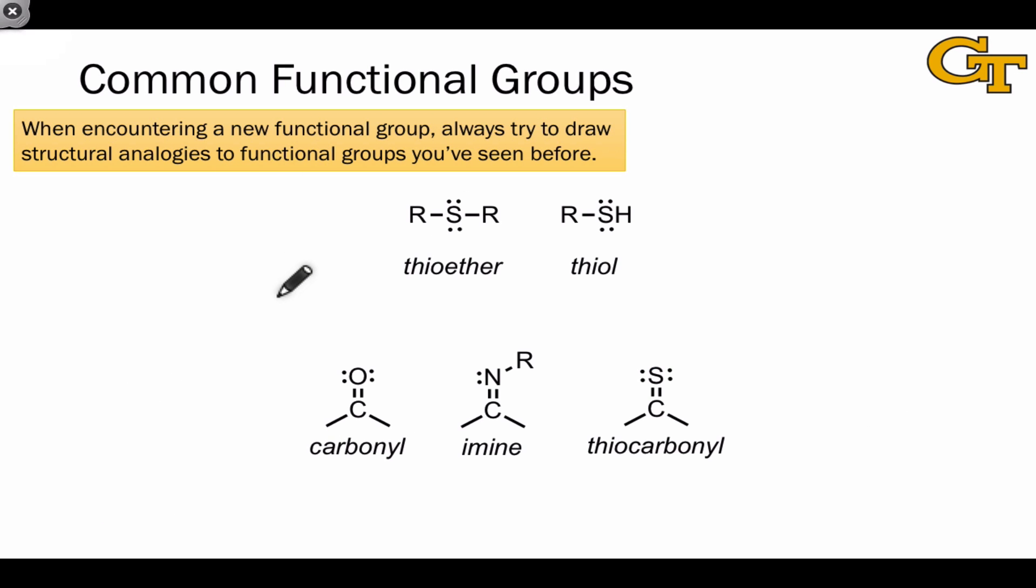Of course, heteroatoms then pretty much amount to all of the elements in the periodic table except carbon and hydrogen. So that brings up the daunting question of how many functional groups are there? Well, as long as you keep in mind our idea to reason by analogy, the number of truly distinct functional groups actually becomes manageable. Whenever you encounter a functional group that appears new, try to make analogies to groups that you've seen before.